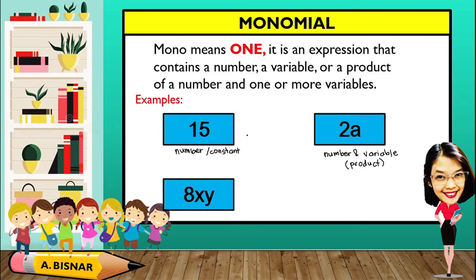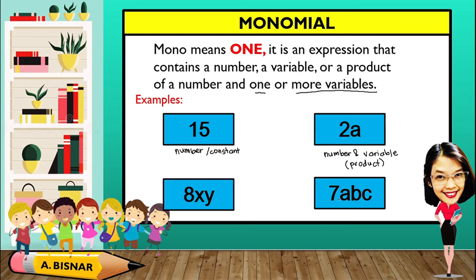Another example: 8xy, the product of 8, x, and y. From the definition, it can be one or more variables, so even if there are 2 variables, it is still considered a monomial. Similarly, 7abc — the product of 7, a, b, and c — has 3 variables, but as long as it is a product, it is still considered monomial.